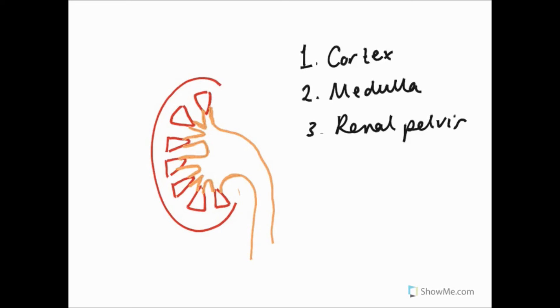The outer, lighter bit of the kidney is called the cortex and it forms a continuous outer zone that has inward projections called the renal columns.